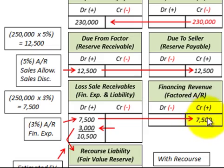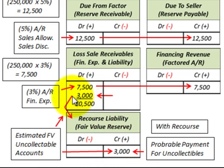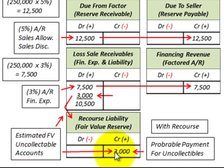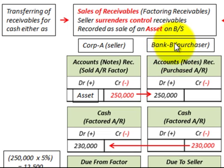If the sale is with recourse, we also set up a liability account for the probable payments for any uncollectible accounts that would go back to Corporation A — the seller is responsible for any uncollectible accounts receivable. This is an estimated amount; in this case, we put down an estimated $3,000. If there are no uncollectibles, no payment is made to Bank B, but if there is recourse liability, Corporation A must pay that amount to Bank B, the purchaser of the receivables.